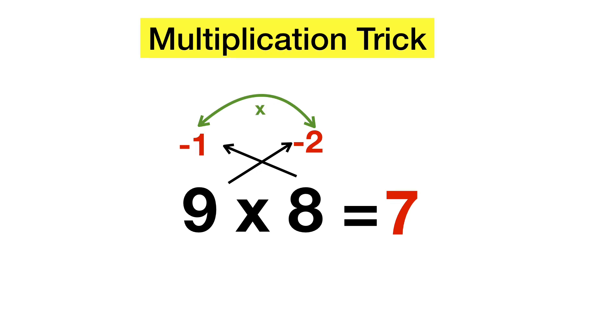This means that negative 1 times negative 2 is positive 2, and that means we should just put a 2 at the end, and there we have our answer. 9 times 8 is equal to 72.